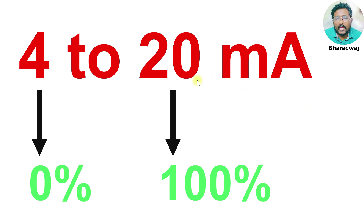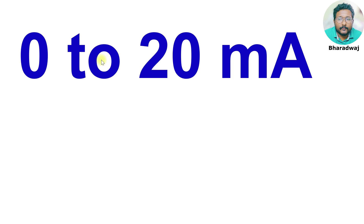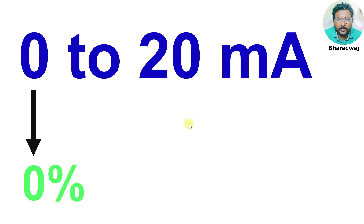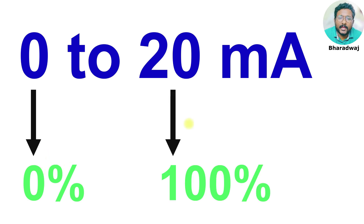Now what I will do is assume 0 to 20 mA as the range instead of 4 to 20. The zero represents 0% of the process variable or zero scale, and 20 represents the full scale value, which is 100% of the process variable.